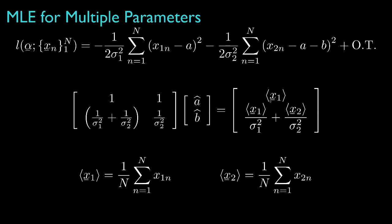And here, the angle bracket notation represents the sample mean for the data. Sample mean for x1 and the sample mean for x2.